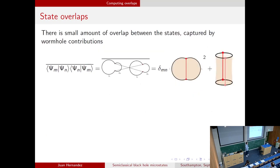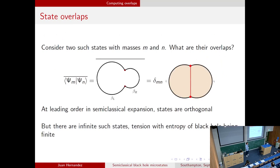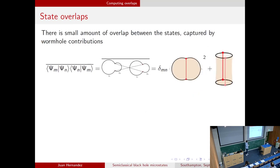Question about the overall bar notation: The overall bar means we're computing by an approximation using a gravitational path integral and also doing a semiclassical approximation to compute that path integral. In principle, you would remove the overbars by doing a full quantum gravity computation, which is not accessible to us.